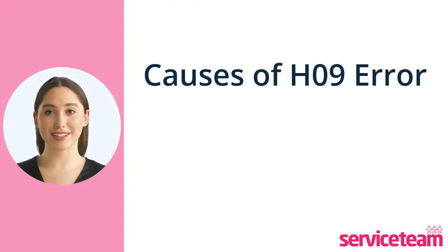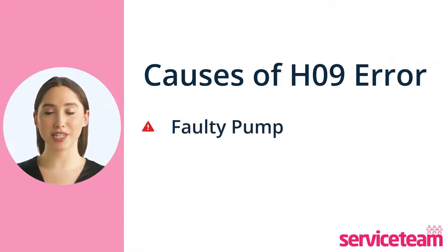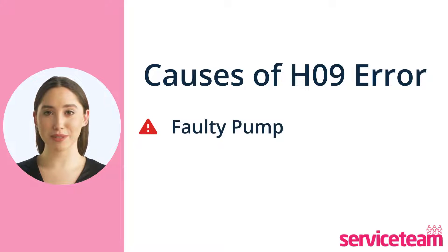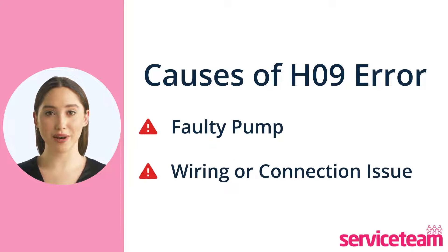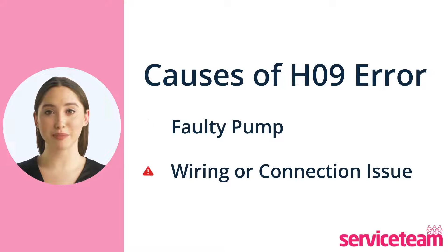When identifying the reasons behind the H09 error, we can pinpoint two potential causes. The first cause is a faulty boiler pump — it indicates that the pump cannot communicate effectively with the printed circuit board. The second cause is wiring or connection issues between the pump and the PCB, which can lead to a breakdown in communication between those two parts.